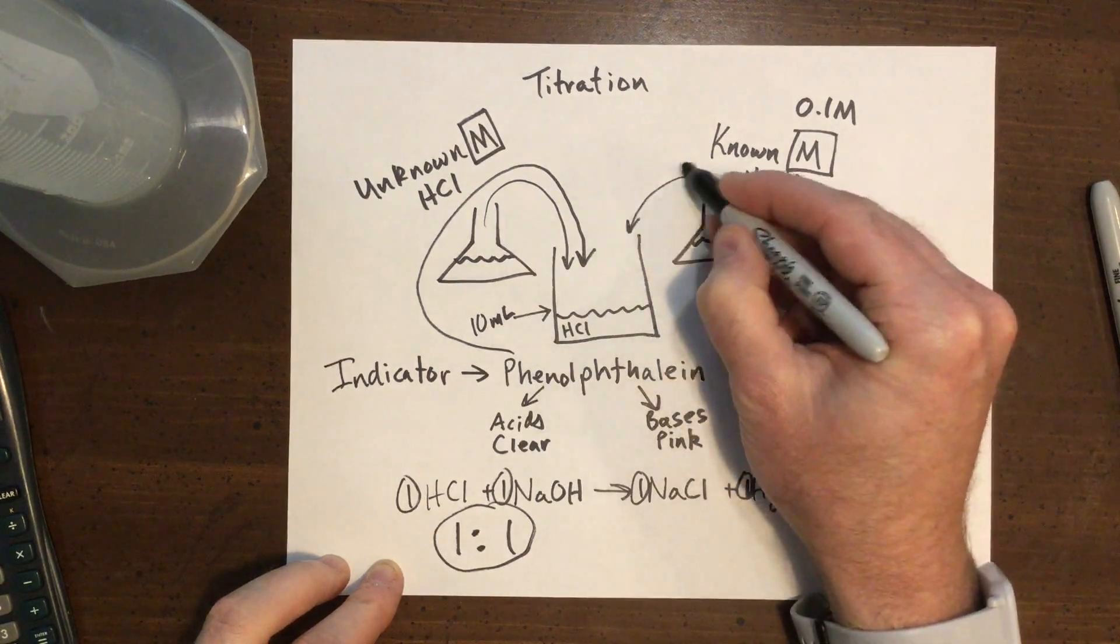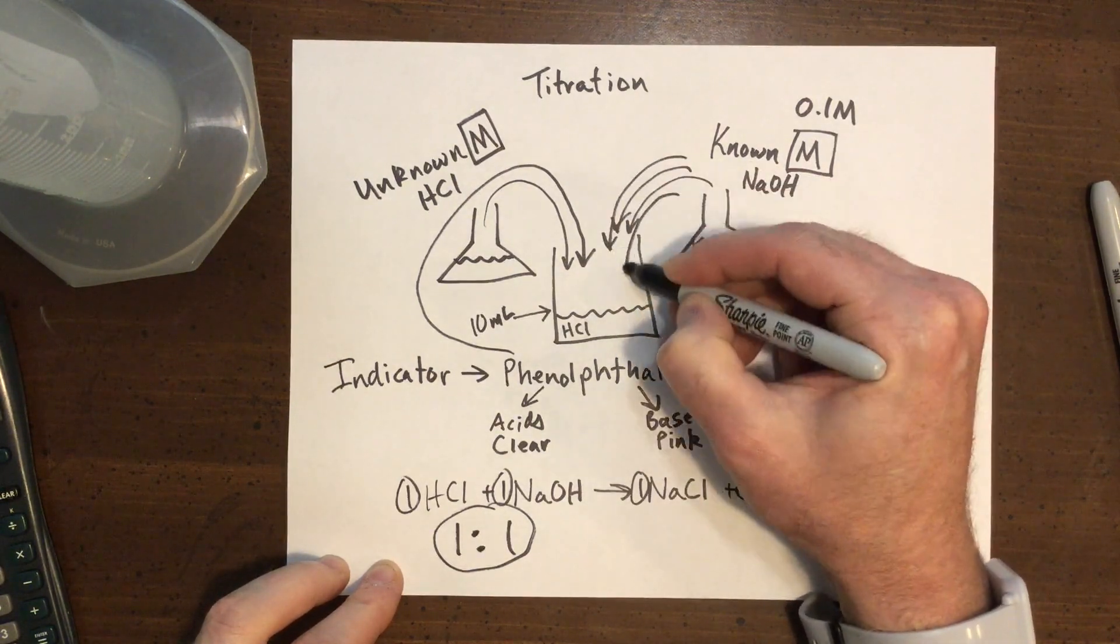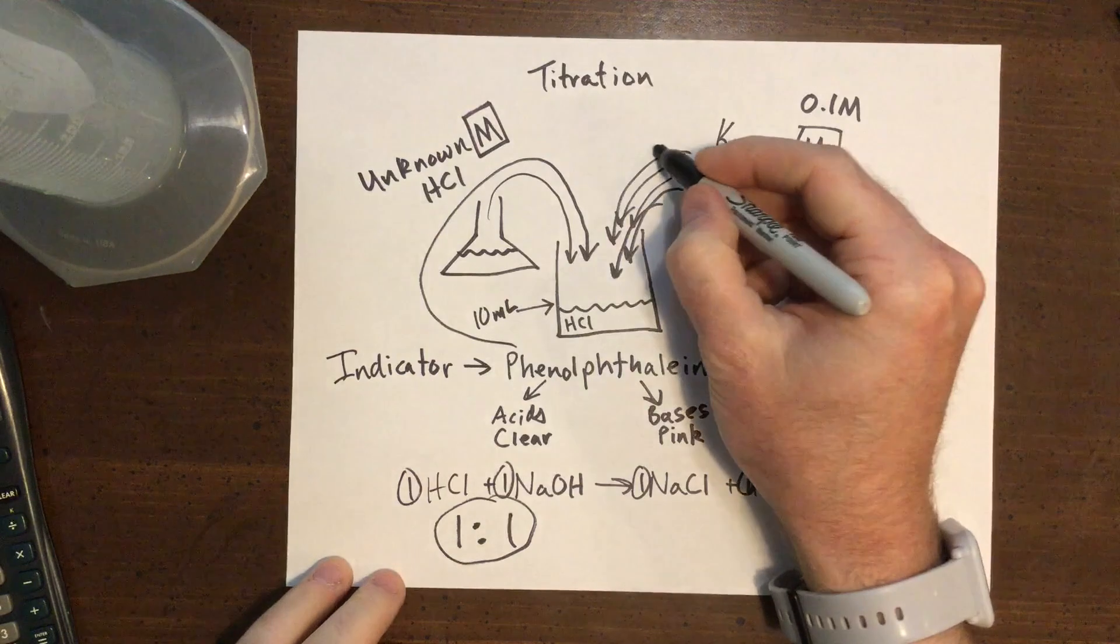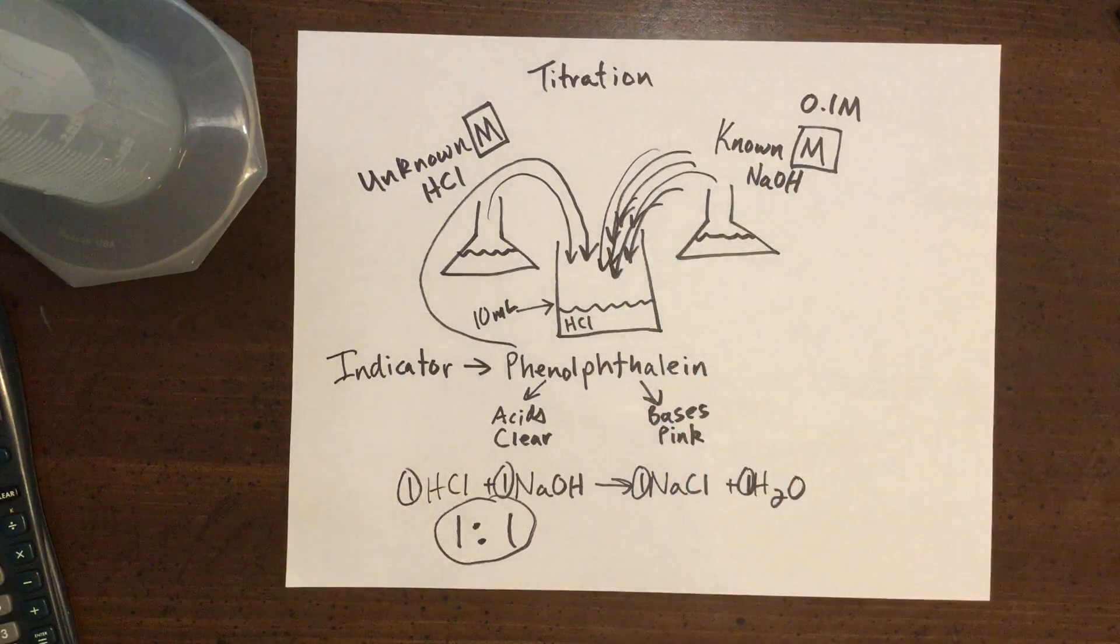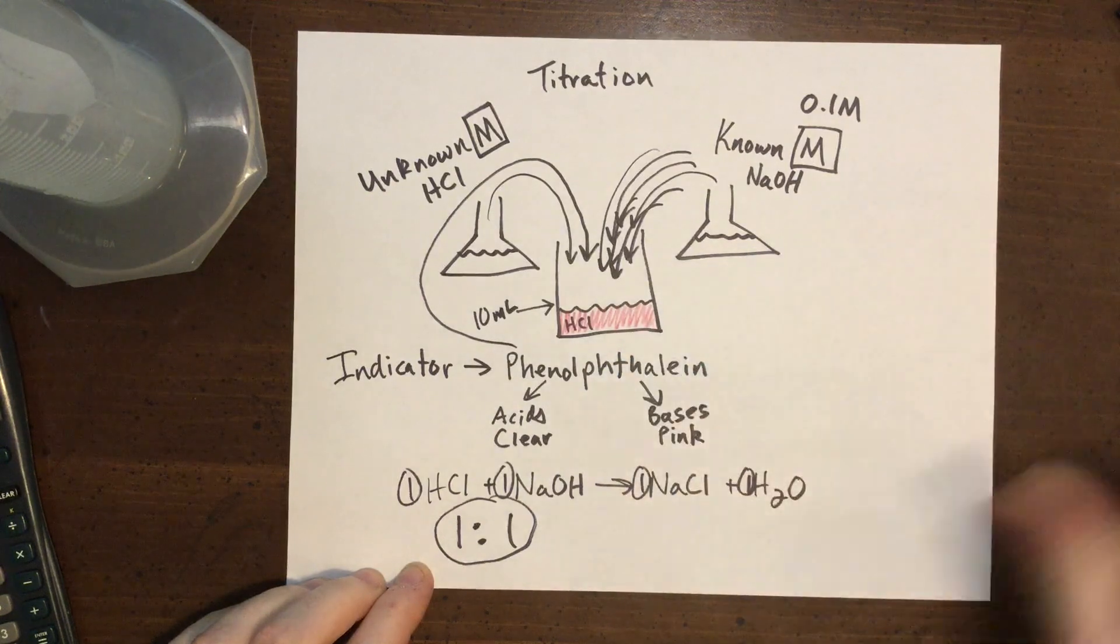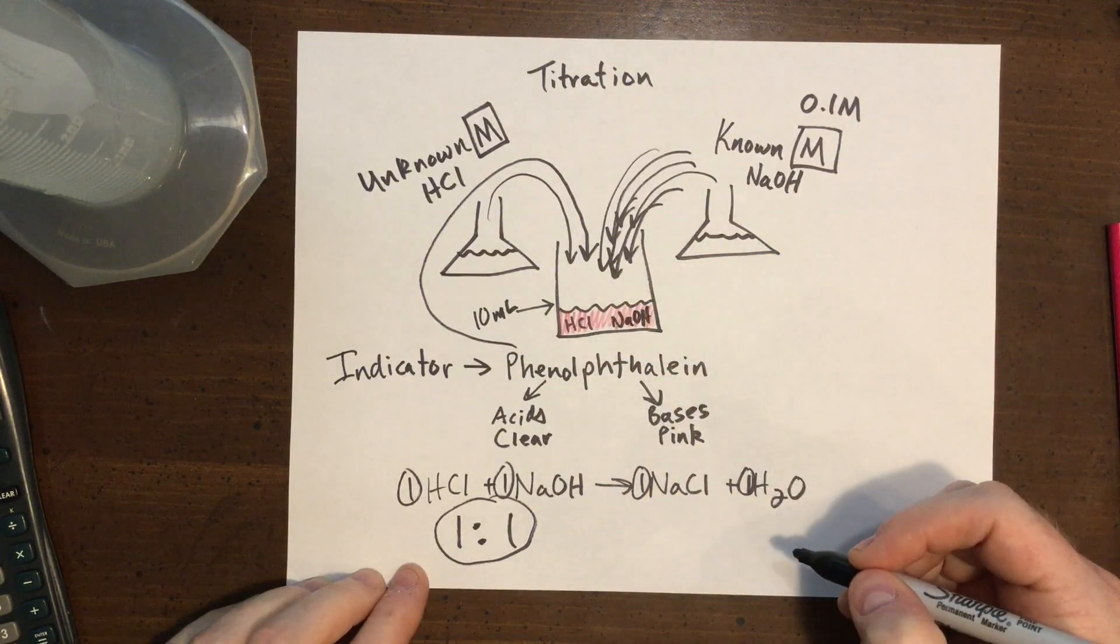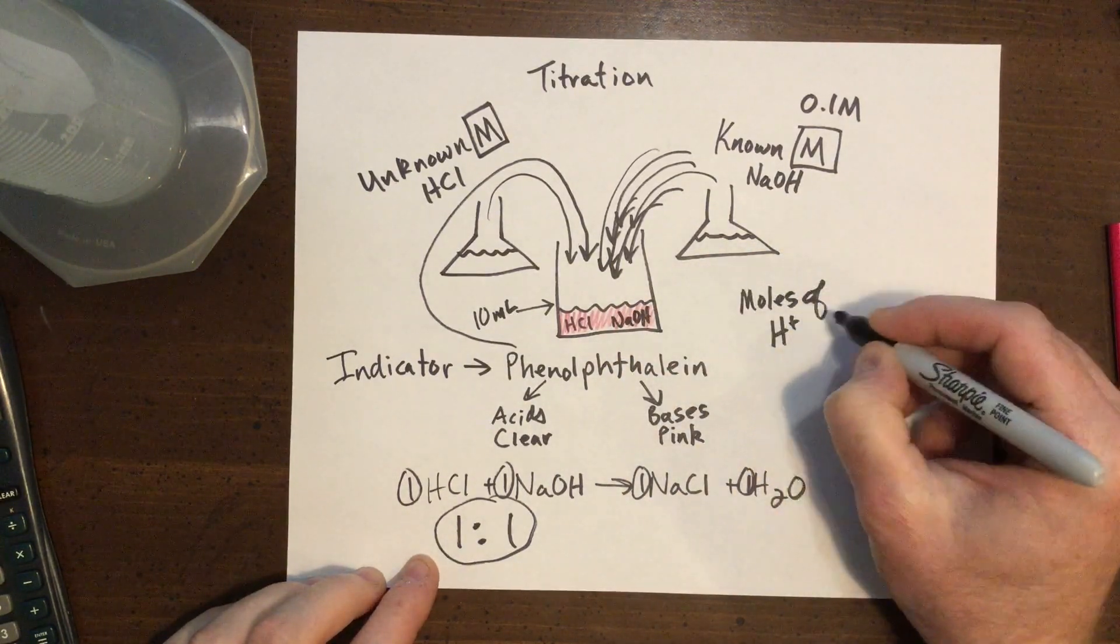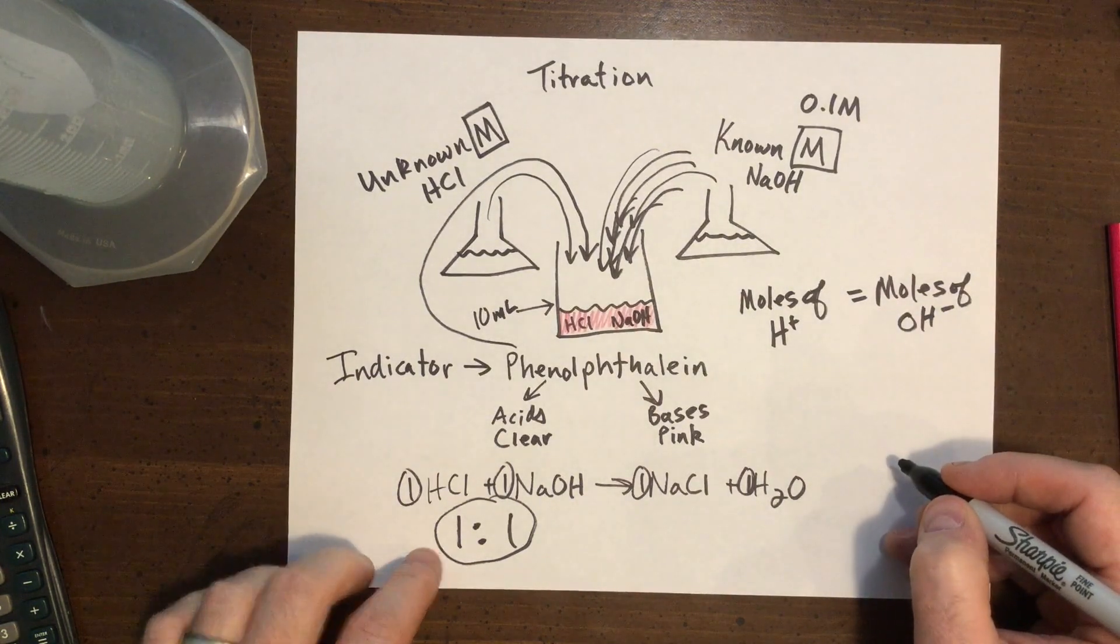So I'm going to slowly be adding the sodium hydroxide over. As I add it over, it's going to stay clear as long as hydrochloric acid is winning. But at some point in time, I'll have added enough sodium hydroxide so that they're actually winning. Then the solution will turn pink. Right around this time, you can say that the moles of hydrogen are equal to the moles of hydroxide.